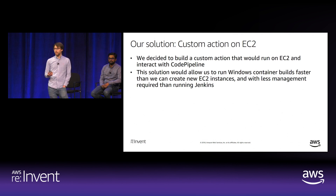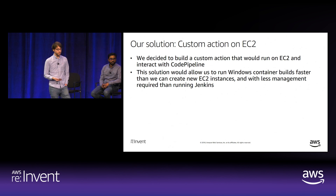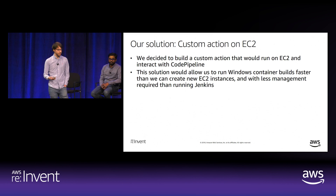The solution we finally settled on was to build a custom action for AWS CodePipeline which would run on Amazon EC2. This allowed us to run Windows container builds faster than spinning up new EC2 instances for each build, and with less management required than running Jenkins.